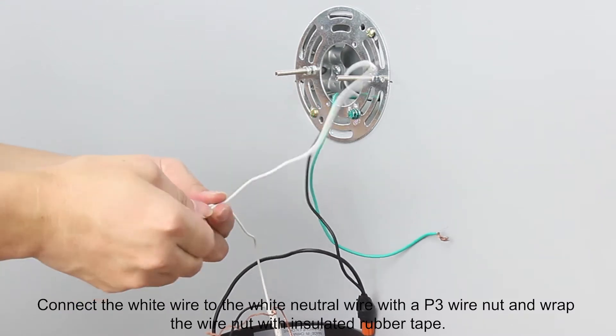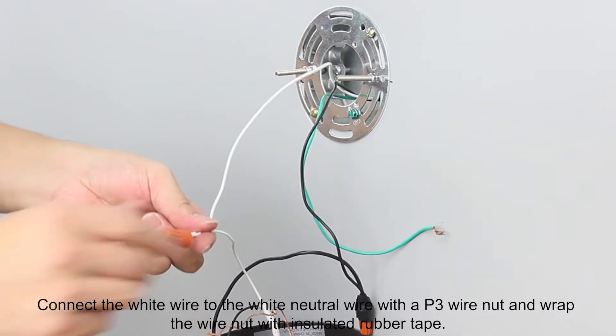Connect the white wire to the white neutral wire with a P3 wire nut and wrap the wire nut with insulated rubber tape.